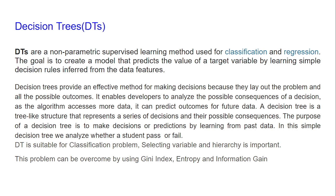It can also predict the outcome for future data. A decision tree is a tree-like structure that represents a series of decisions and their possible consequences. The purpose of a decision tree is to make decisions or predictions by learning from past data. For example, we analyze whether a student will pass or fail based on some predictors. This problem can be overcome by using concepts like entropy, information gain, and Gini index.